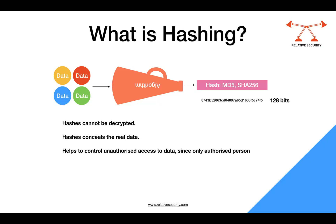Key points for hashing: they conceal the real data. You cannot decrypt the hash — you cannot go backwards. If you have a hash of some data or information, you cannot decrypt this hash string and recover the original data; that is not possible. It helps you control any unauthorized access to the data, since only an authorized person should be able to access it. If any unauthorized person has accessed and tampered with the data, through hashing you would be able to identify that. As we discussed during the integrity topic, it is the same hash, because hashing ensures the integrity of the data is maintained at all times.